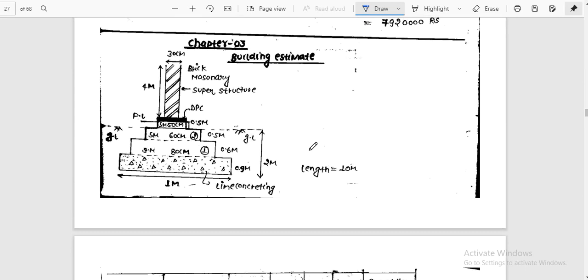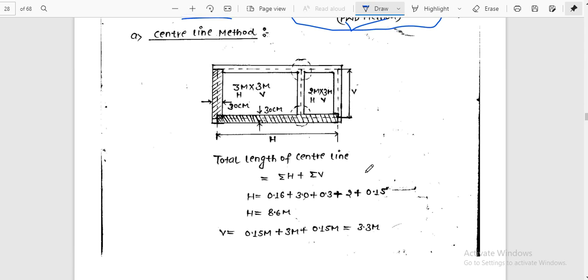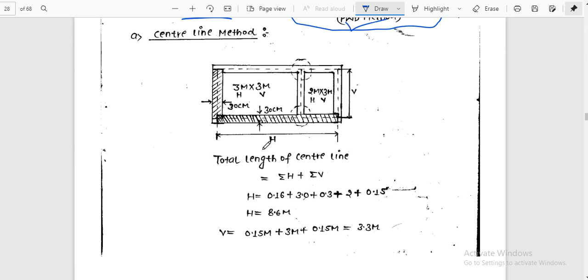Next, building estimate methods, very important. One is center line method. The total length is summation of horizontal length plus summation of vertical. Length of total center line equals summation of horizontal walls plus summation of vertical walls.